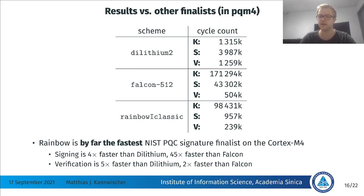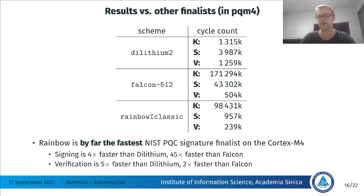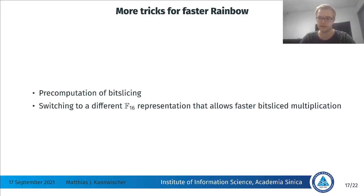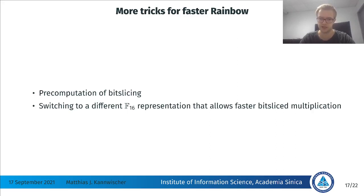Comparing Rainbow to other PQC signature finalists on the Cortex-M4: signing is four times faster than Dilithium and 45 times faster than Falcon, and verification of Rainbow is five times faster than Dilithium and two times faster than Falcon.